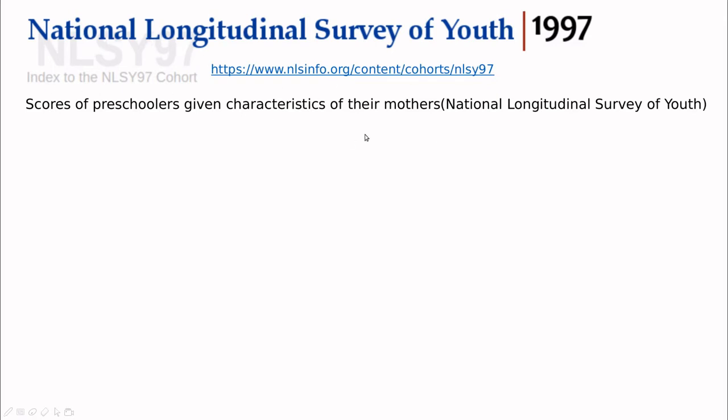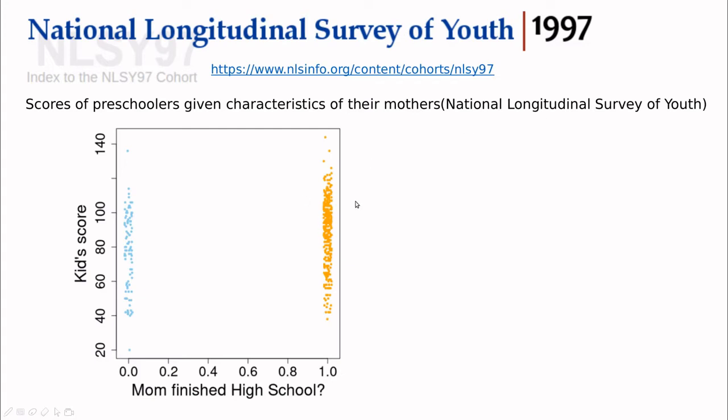This dataset is taken from the National Longitudinal Survey of Youth in the United States. The idea was to analyze the scores of preschoolers given characteristics of their mothers. In this case you can see the kids score on a given test, and here is the question: did mom finish high school? As you can see, the data doesn't show much. The only thing we can see from this plot is that the data is imbalanced - we have much more data here than here.